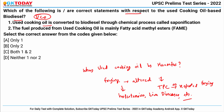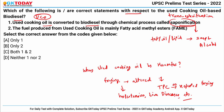Statement one says used cooking oil is converted to biodiesel through a chemical process called saponification. Actually, UCO is converted to biodiesel using a process called transesterification, not saponification. Saponification is the conversion of fat, oil, or lipid into soap and alcohol by the action of aqueous alkali such as NaOH. In transesterification, fatty acid triglycerides in the used cooking oil react with alcohol in the presence of a catalyst to convert it into biodiesel. So statement one is wrong.